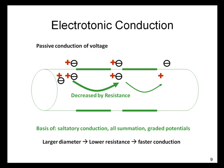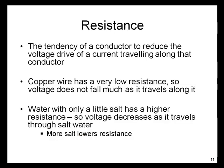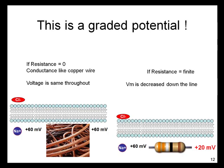Electrotonic transmission of an electric field is very rapid, but the field strength diminishes greatly over distance. The amount the field weakens depends on the resistance along the length of the axon's fluid. If the resistance going along the intracellular fluid was zero — so that the conductance was much like what would happen in a copper wire — the voltage would be the same all along the length of the membrane. But in a fluid, resistance is finite. Resistance is the tendency of a conductor to reduce the voltage drive of a current traveling along it. Since copper has a very low resistance, voltage does not fall very much along its length. Water with only a little salt has a much higher resistance, so voltage decreases as it travels through the salt water. More salt will lower the resistance. So, the transmembrane potential is decreased as it travels along the length of the axon, which is filled with salt water. This is a classic example of what a graded potential is.